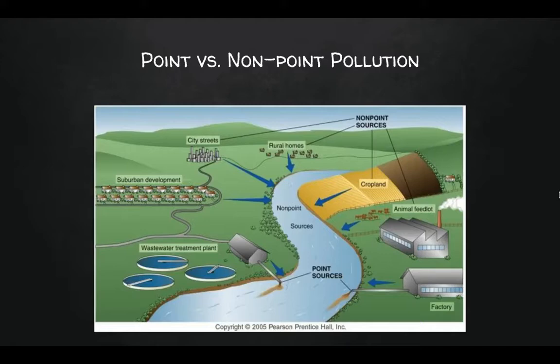Many different environmental conditions can have effects on our local rivers. Even when you are not directly next to a river, pollution anywhere in a watershed could have an effect on water quality. We categorize water pollution into two main categories: point and non-point source pollution.